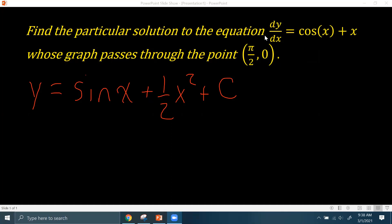And then the next thing to do is to use your initial value, π/2, 0. Often the x value given is going to be zero, but in this case it's not and that's okay.